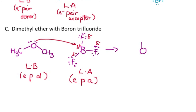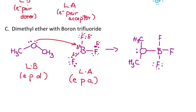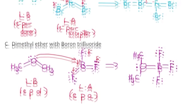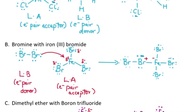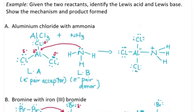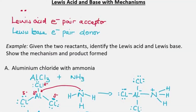The final product shows oxygen with its two methyl groups and a lone pair bonded to boron, which is attached to three fluorine atoms each with their lone pairs. That covers identifying Lewis acids and Lewis bases and how electron pair donors and electron pair acceptors apply to reaction mechanisms. Stay smart and believe in yourselves.